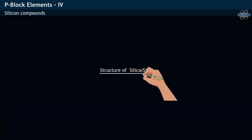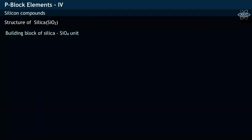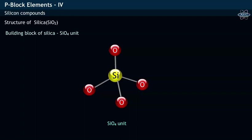What is the structure of silica or SiO2? The building blocks of silica are SiO4 units. The central silicon atom present in the SiO4 unit is sp3 hybridized.